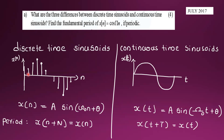A discrete-time sinusoid is defined only at discrete intervals of time. Signals that are defined at discrete intervals are known as discrete-time signals. The general expression for a discrete-time signal is x(n) = A·sin(ω₀n + θ), while the continuous-time sinusoid general expression is x(t) = A·sin(ω₀t + θ).